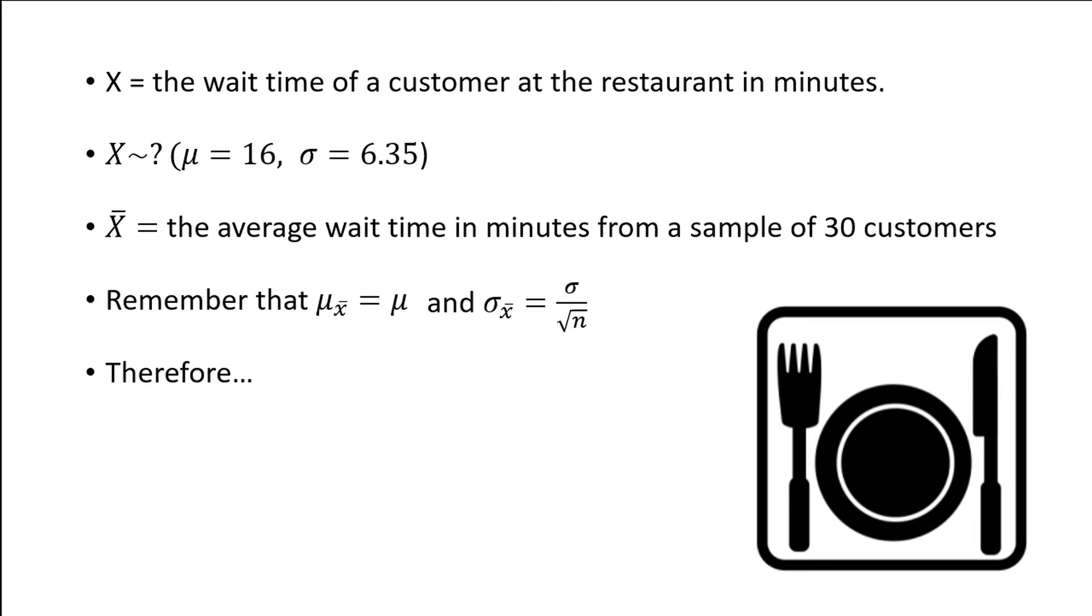The central limit theorem says that the sampling distribution of X-bar follows a normal distribution with a mean of 16 and a standard deviation of 6.35 divided by the square root of 30, which comes to 1.16.